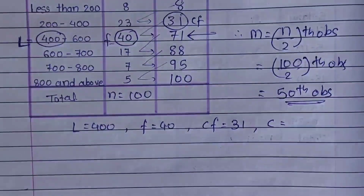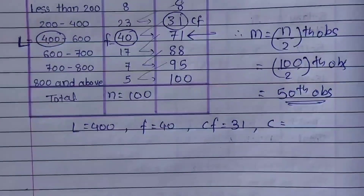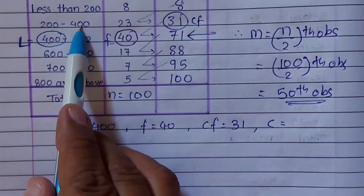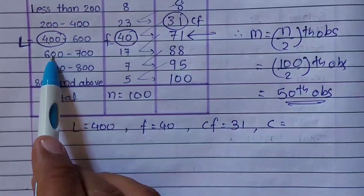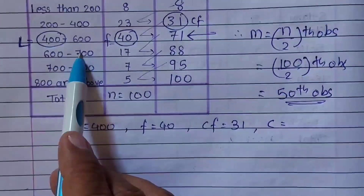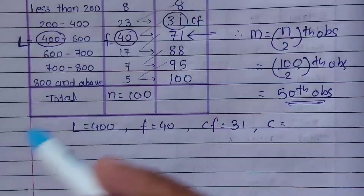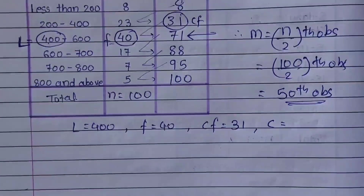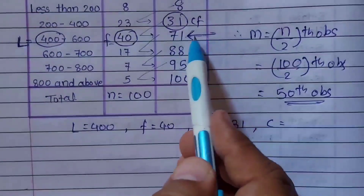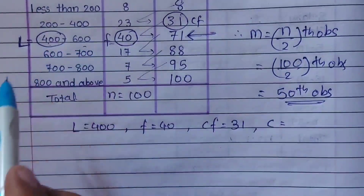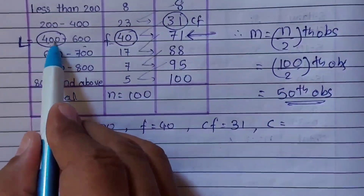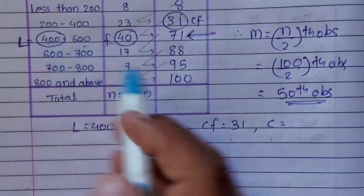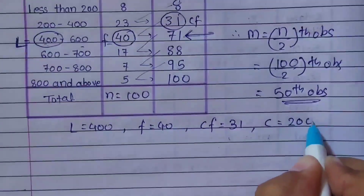The only issue is finding C, the class length, because all classes do not have equal width. 200–400 has a gap of 200; 400–600 also has a gap of 200; but 600–700 has a gap of only 100. When class lengths differ, you take the class length of the median class — which here is 400–600. So C = 600 − 400 = 200.